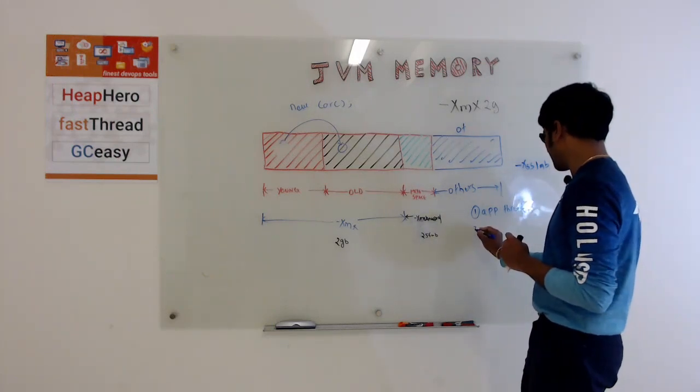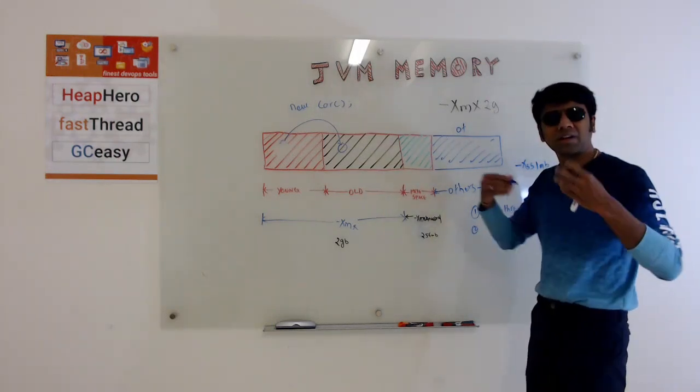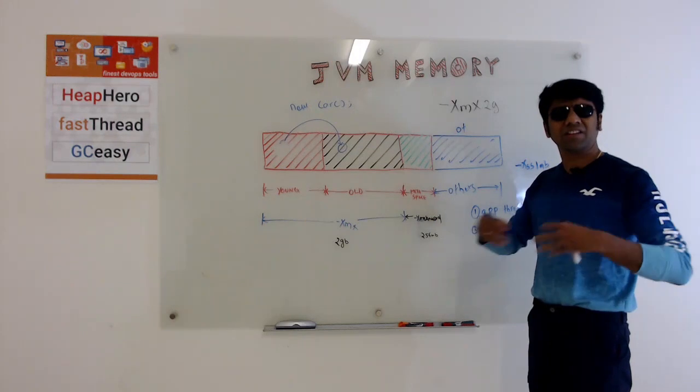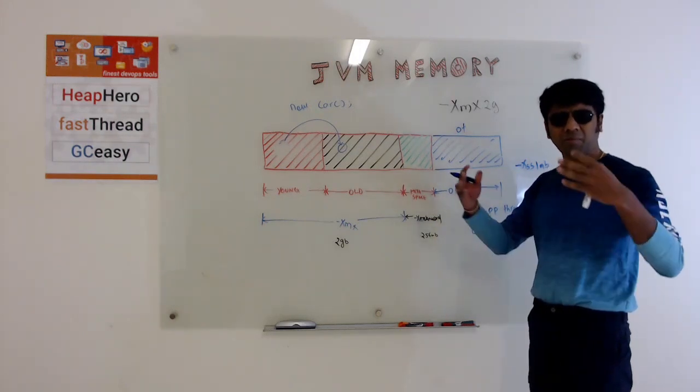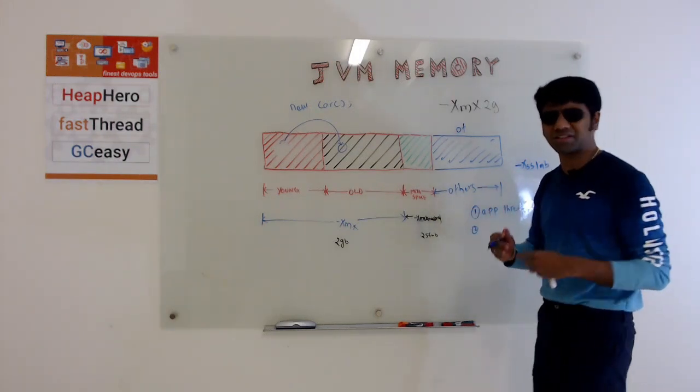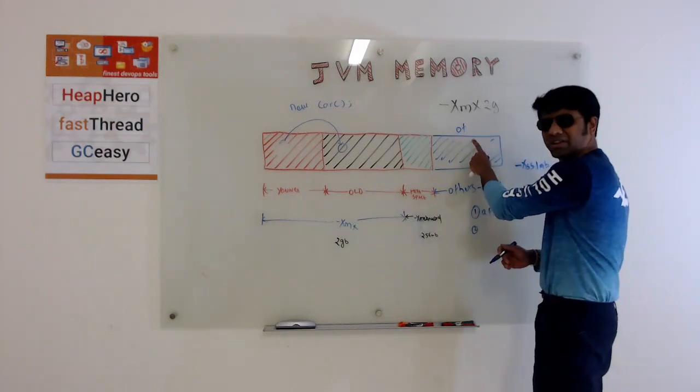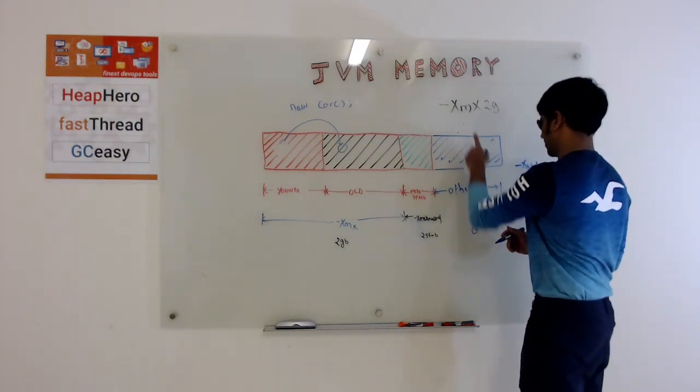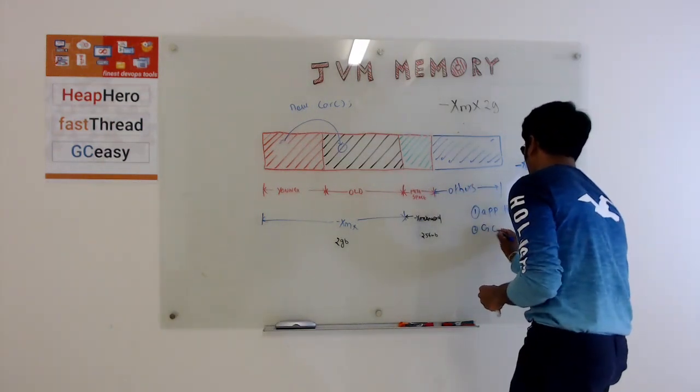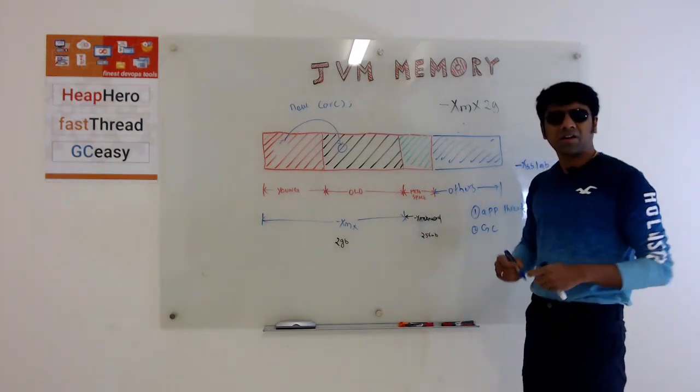The second thing that is stored in this others region is to do the garbage collection. Garbage collection needs its own memory to keep the pointers, to references, and all those things. So those are stored in this region.